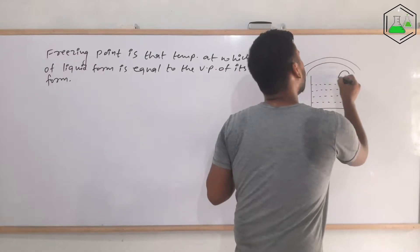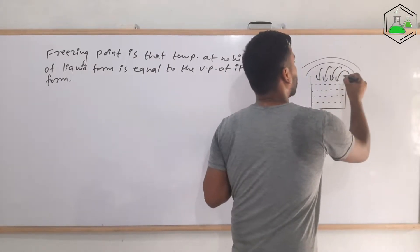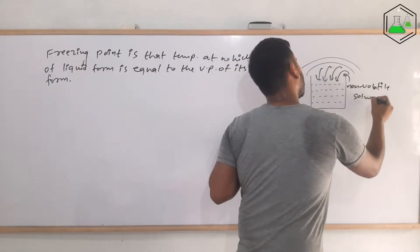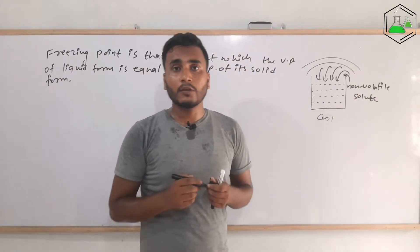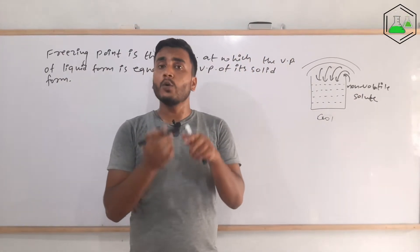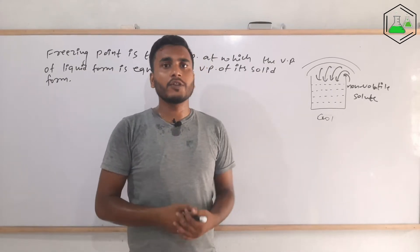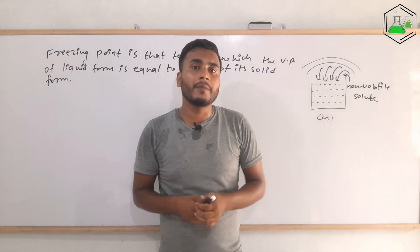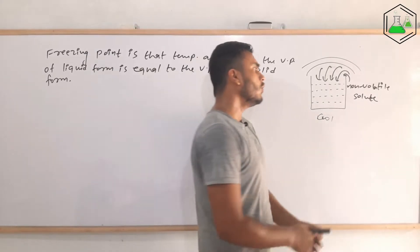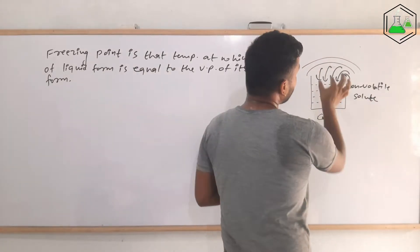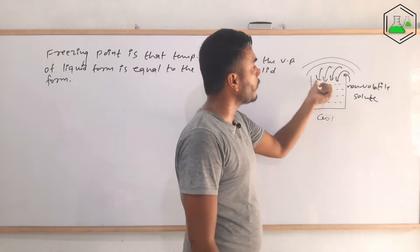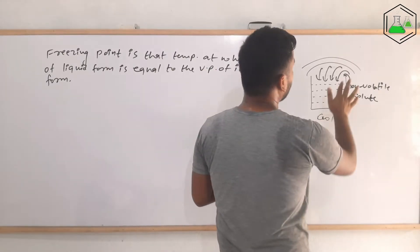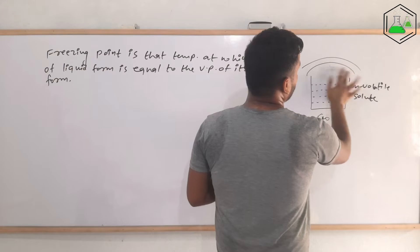Now, what happens if we add a non-volatile solute in it? We know that if we add a non-volatile solute in a liquid, then it lowers the vapor pressure — that is Raoult's law — because it blocks the surface sites of the liquid, so it will decrease the vapor pressure. And if we start to cool it, then what will happen?